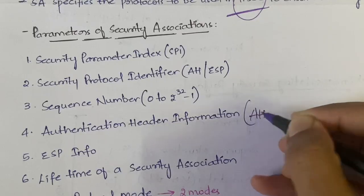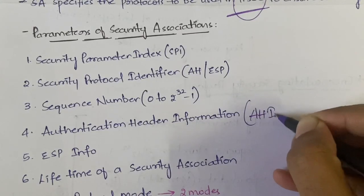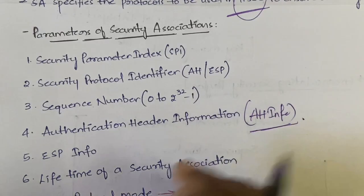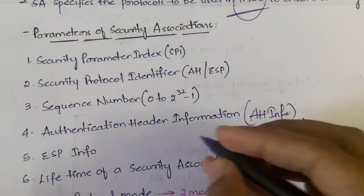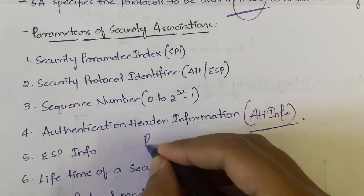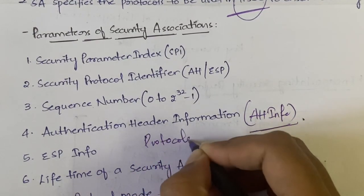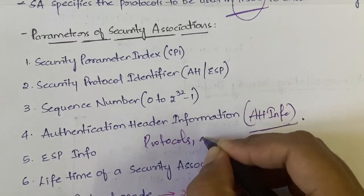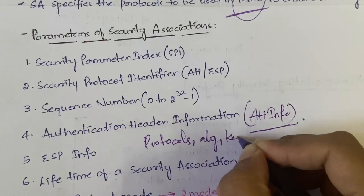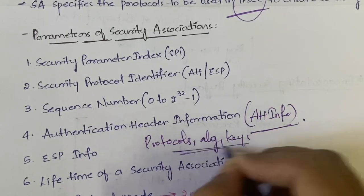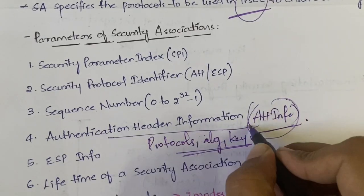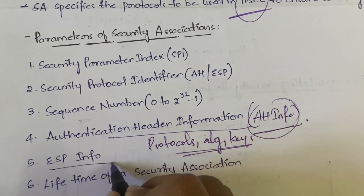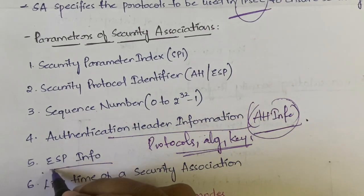Next is Authentication Header Information, or AH Info. That is all the information related to the Authentication Header — what protocols are being used, what algorithms are being used, and what keys are being used. All this information related to the Authentication Header will be stored under the AH Info parameter.